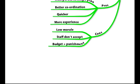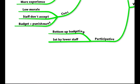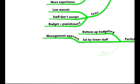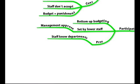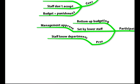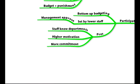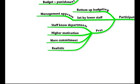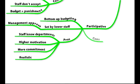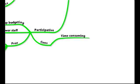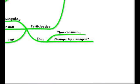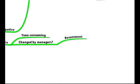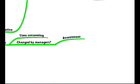A participative budget is bottom-up budgeting — it's set by the lower staff and then approved by management. On the plus side, staff will know the departments potentially better than senior staff, it leads to higher motivation because they can set achievable targets, and more commitment because they've had a part to play in setting the budget. It will also be more realistic. On the downside, it can be time-consuming — it's management by committee effectively. Also, if senior management change the initial budget set by employees, that will lead to resentment within the lower management levels.